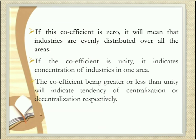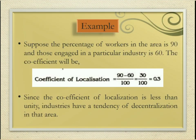If this coefficient is 0, it means that industries are evenly distributed all over the areas. If the coefficient is unity, it indicates concentration of industries in one area. A coefficient greater than unity indicates tendency of centralization; less than unity indicates decentralization. For example, suppose the percentage of workers in the area is 90 and those engaged in a particular industry is 60. The coefficient will be (90 minus 60) divided by 100, that is 30 divided by 100, equal to 0.3. Since the coefficient of localization is less than unity, industries have a tendency of decentralization in that area.